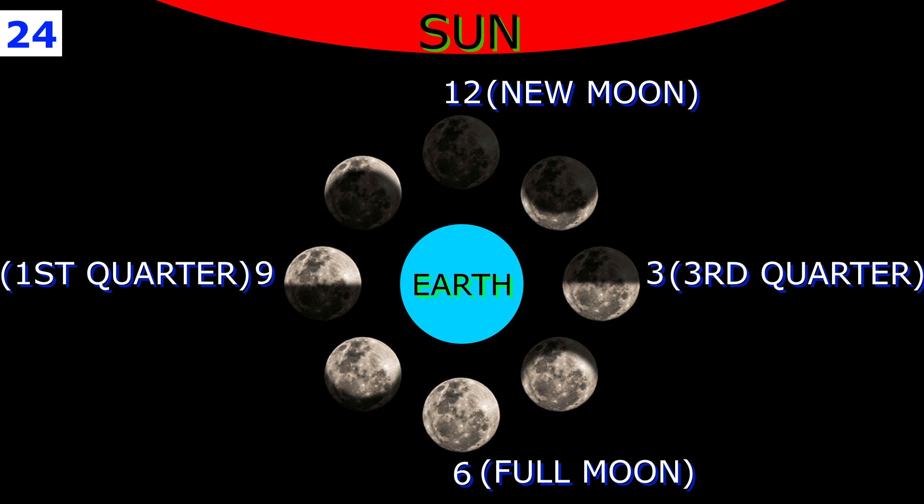For those of us in the northern hemisphere, the moon travels in a counterclockwise orbit. Each of these primary moon phases marks a quarter of the lunar cycle and lasts only a moment.